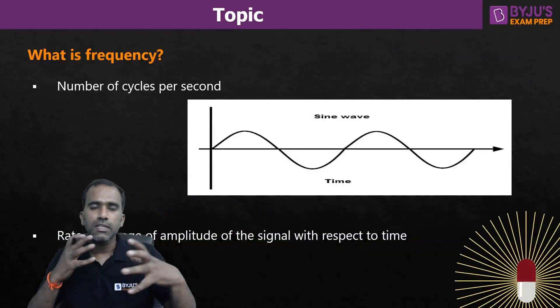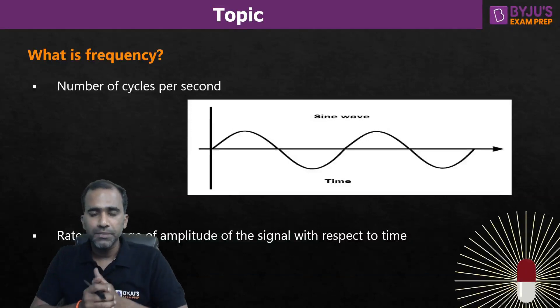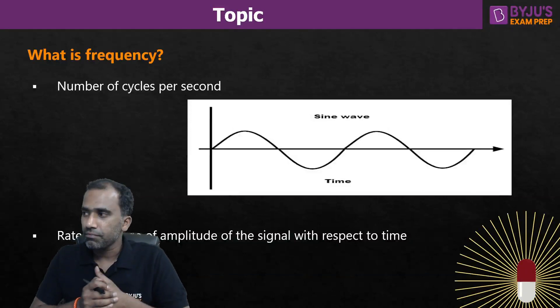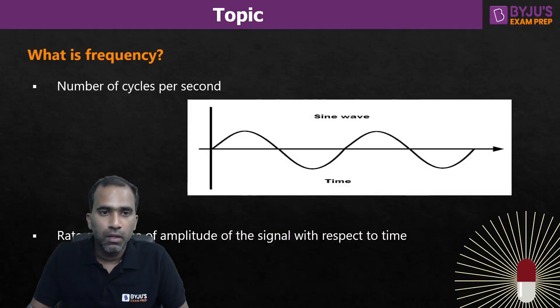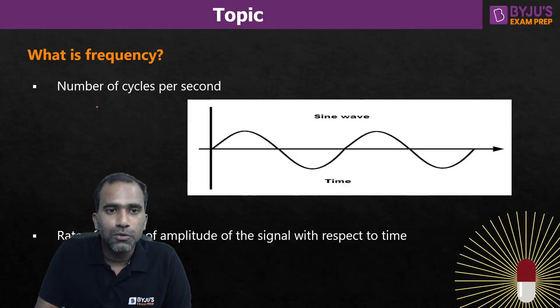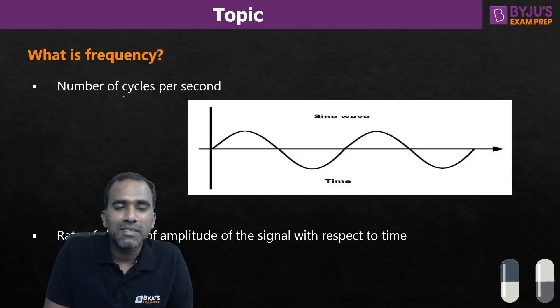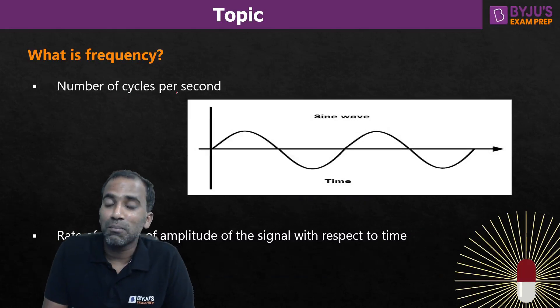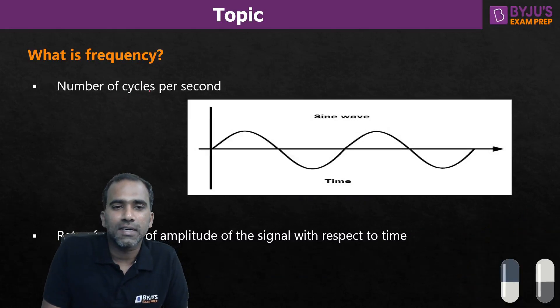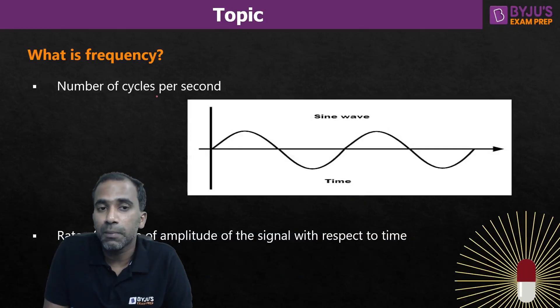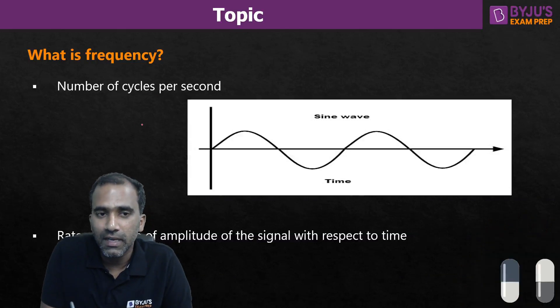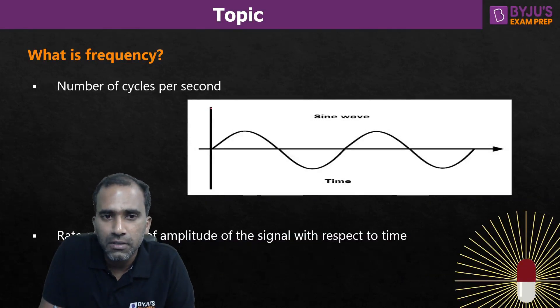Let us understand what frequency is. The definition you people will give is: it is the number of cycles per second. That is correct. But I will give you a better definition here.